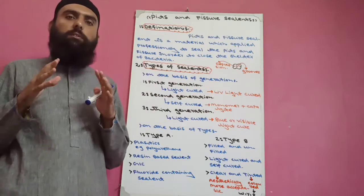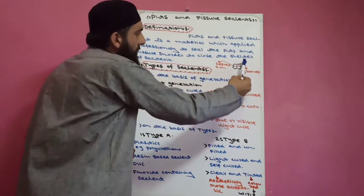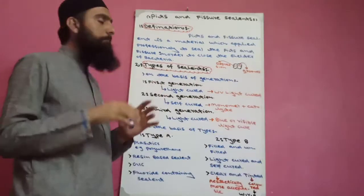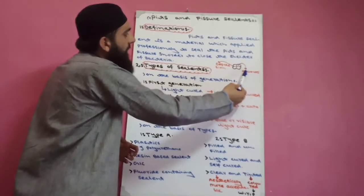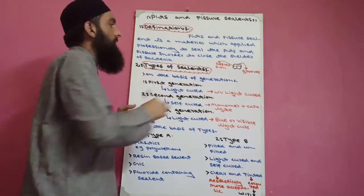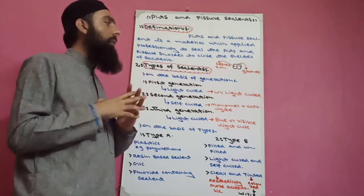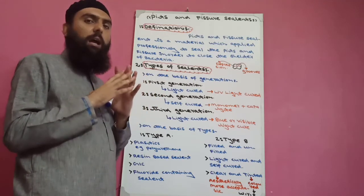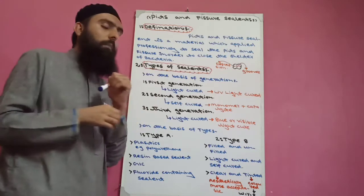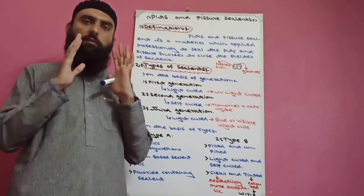Before going to the definition of pits and fissure sealants, we should understand what a pit is and what a fissure is. On the occlusal surface of posterior teeth there are longitudinal grooves — these are called fissures. Along with grooves, there are depressions on the occlusal surface called pits. Fissures are longitudinal grooves present on the occlusal surface of posterior teeth.